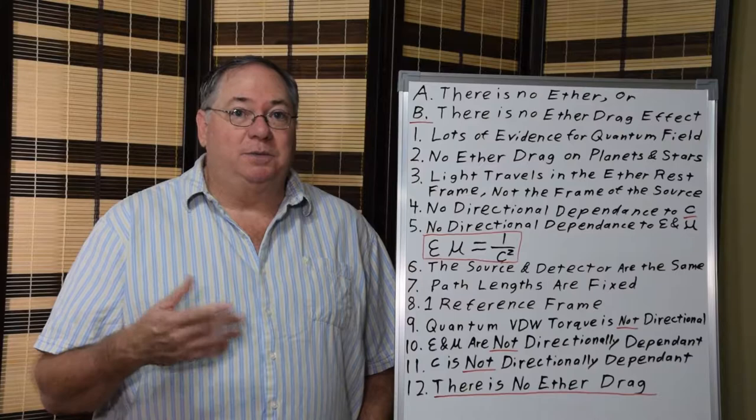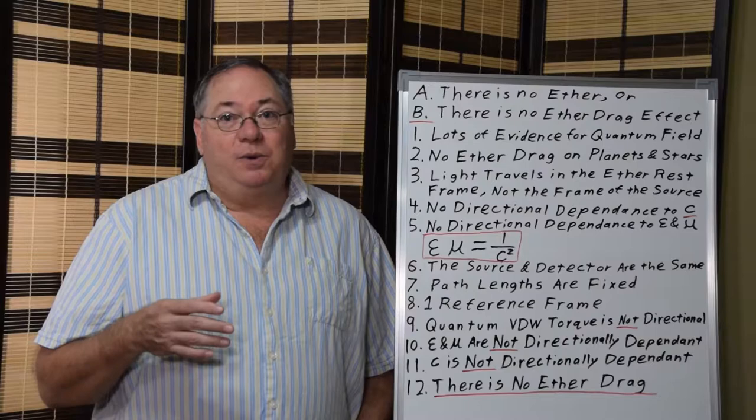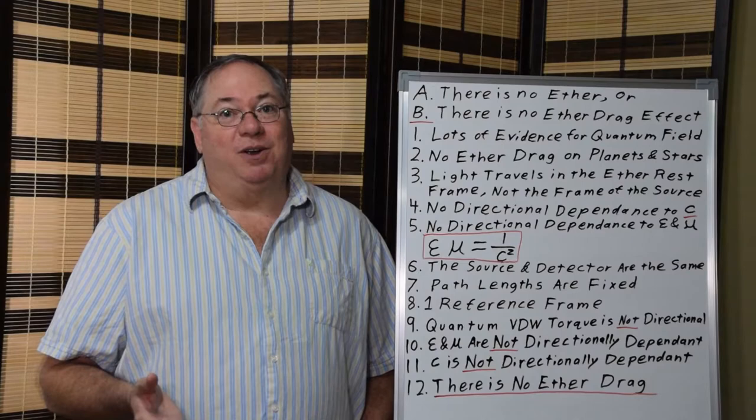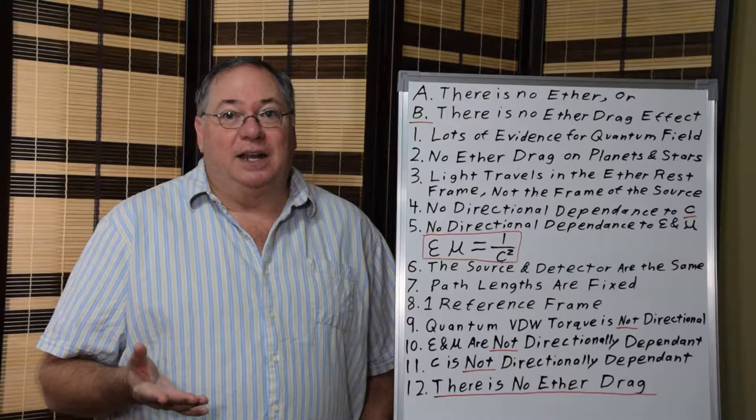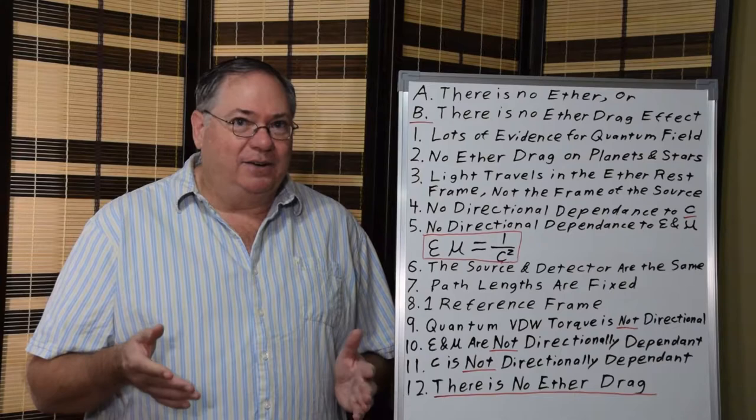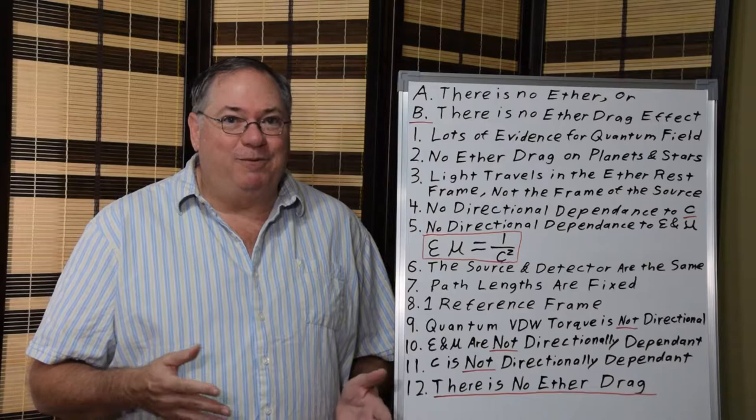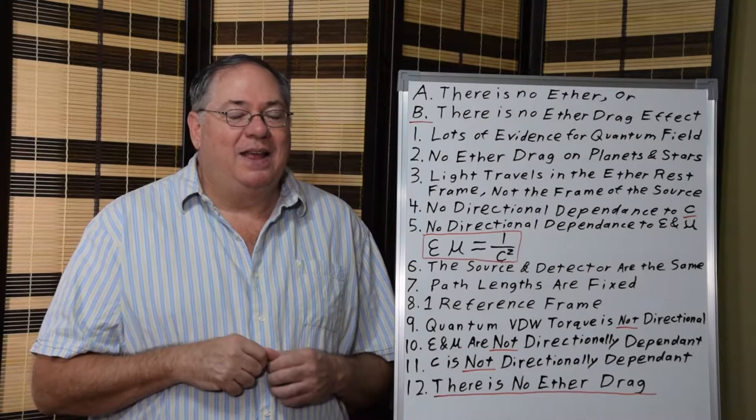The assumption behind the experiment goes back to a conjecture made by Maxwell. Since the quantum field exists, Maxwell's conjecture was wrong, and the experiment should always get the result it got. Since the quantum field exists and it's an ether, everyone who tries to reproduce the Michelson-Morley experiment in one form or another is just wasting their time. It's really kind of silly.